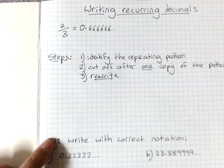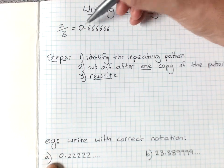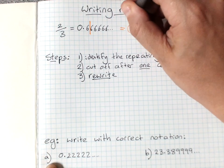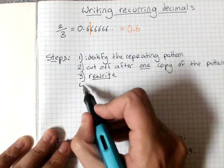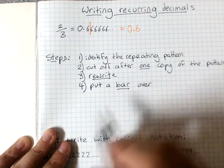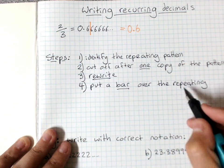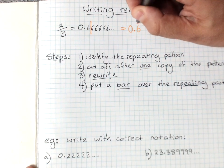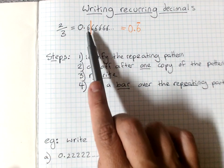So our steps on this example are: identify the repeating pattern, 6. Cut off the number after one copy of the pattern. So here's the start of the pattern, one copy of the pattern, cut it off and rewrite everything up to when you cut off. And then we put in the bit that says, hey, this repeats forever. And that is a bar over the whole copy of that repeating pattern that you just wrote. Now the bar only goes over that repeating part. And you only wrote one copy of the repeating part. So the bar here just goes over the 6. And if you see a bar like that over a number, it means this should keep going forever, 666666.